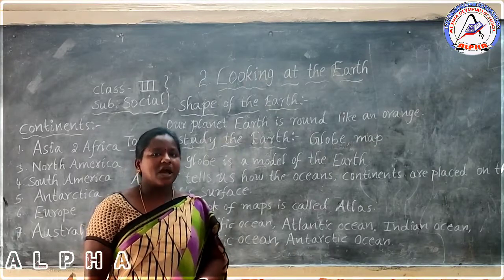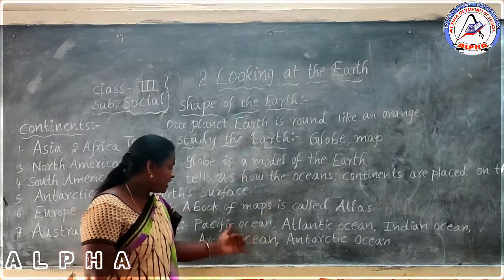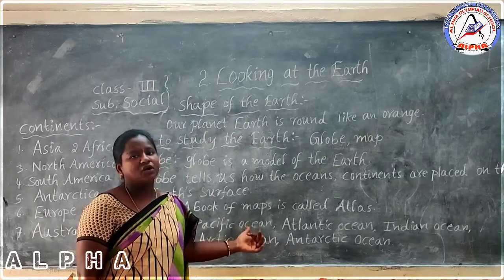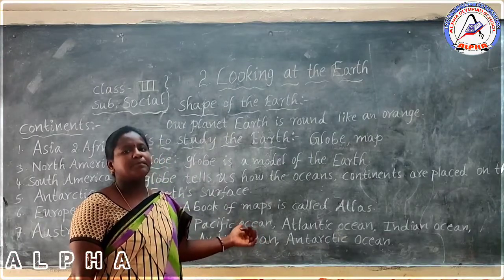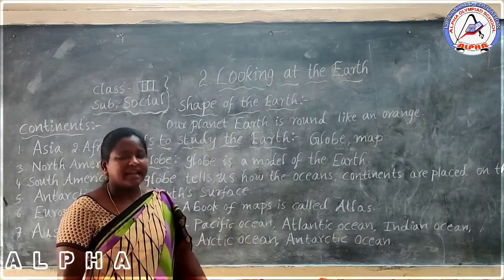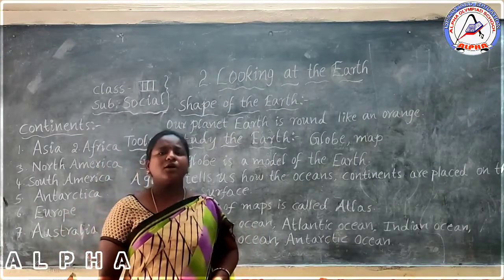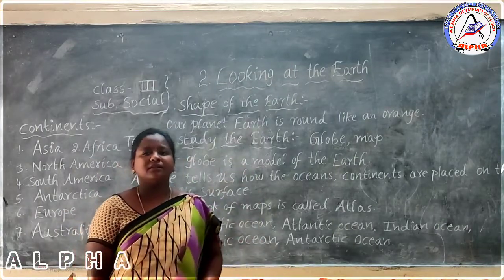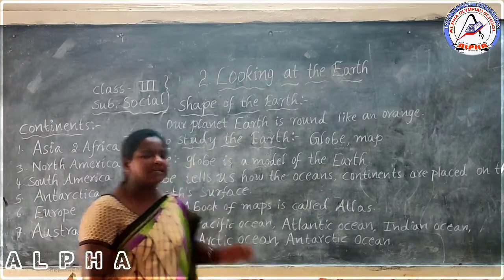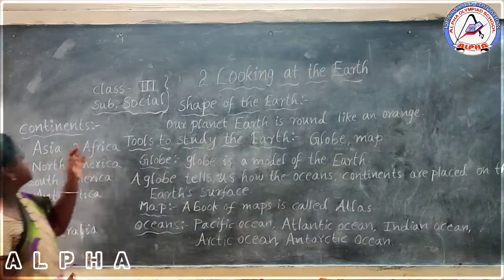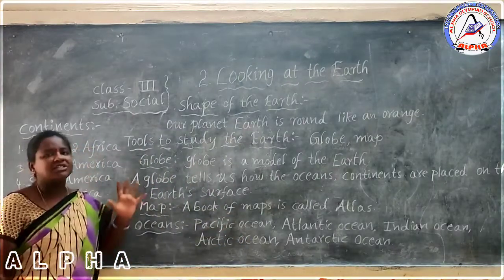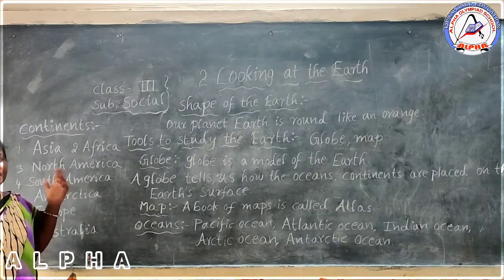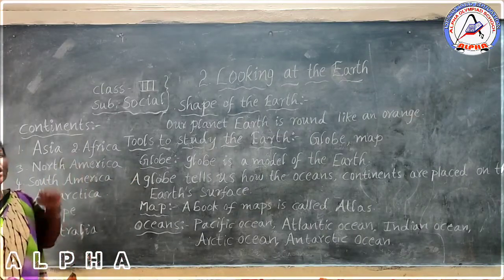Among these, the largest ocean is the Pacific Ocean. Next, on the world map, what do we observe? Continents. What is meant by a continent? A continent means a larger area — a larger area covered on the surface of the earth is called a continent.